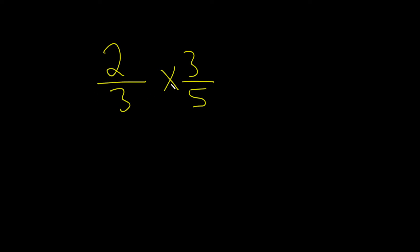Multiply 2 thirds times 3 over 5. The first thing we should do is look to see if anything can cancel.